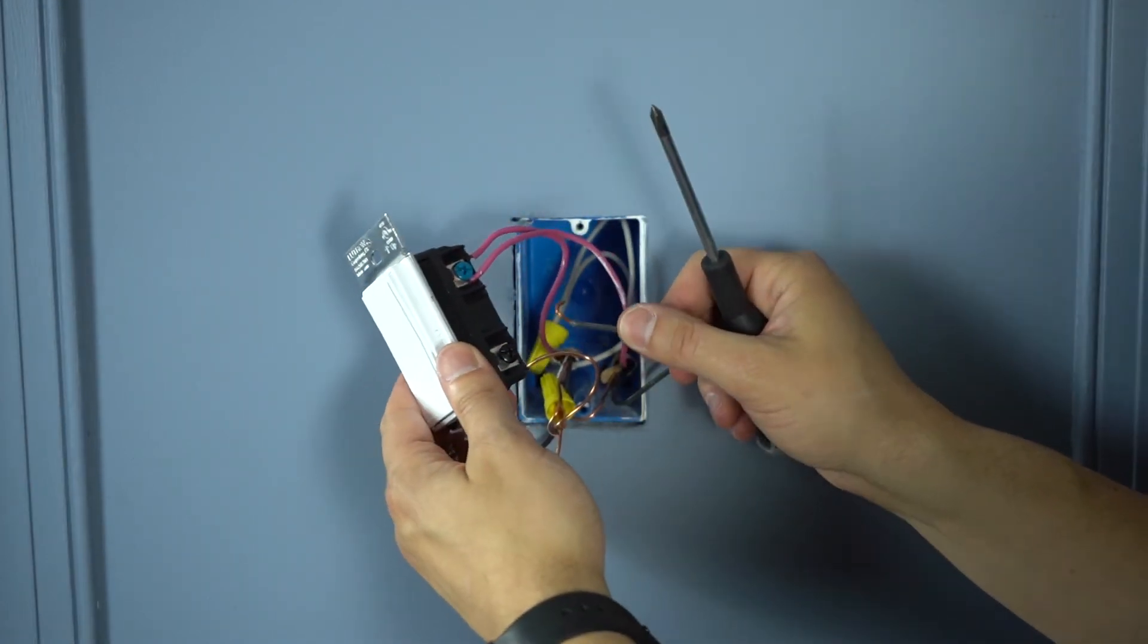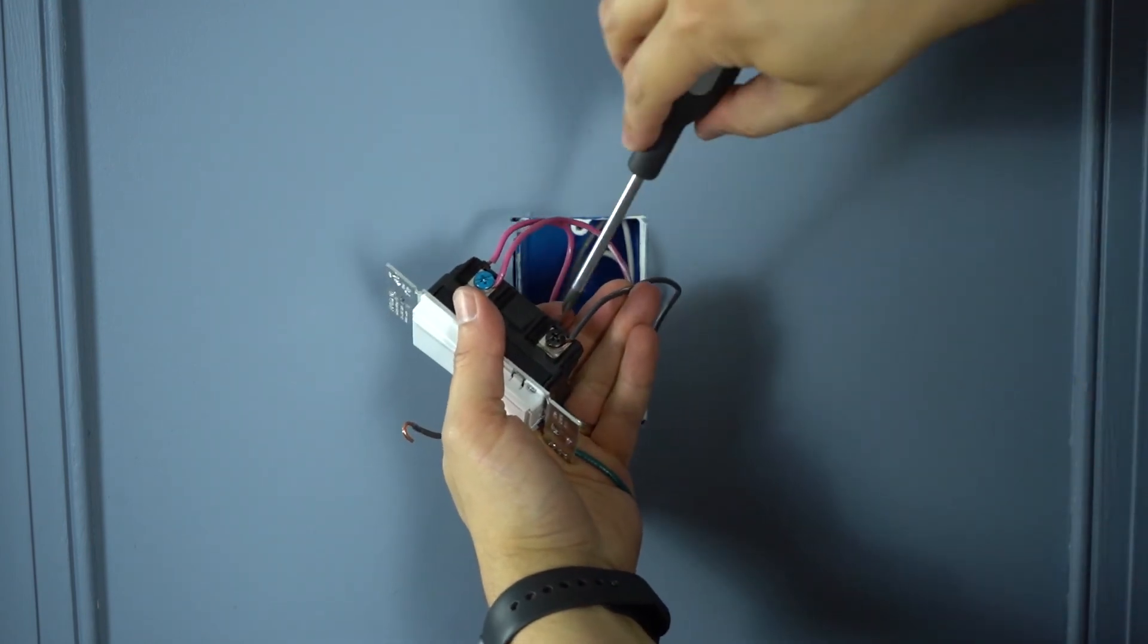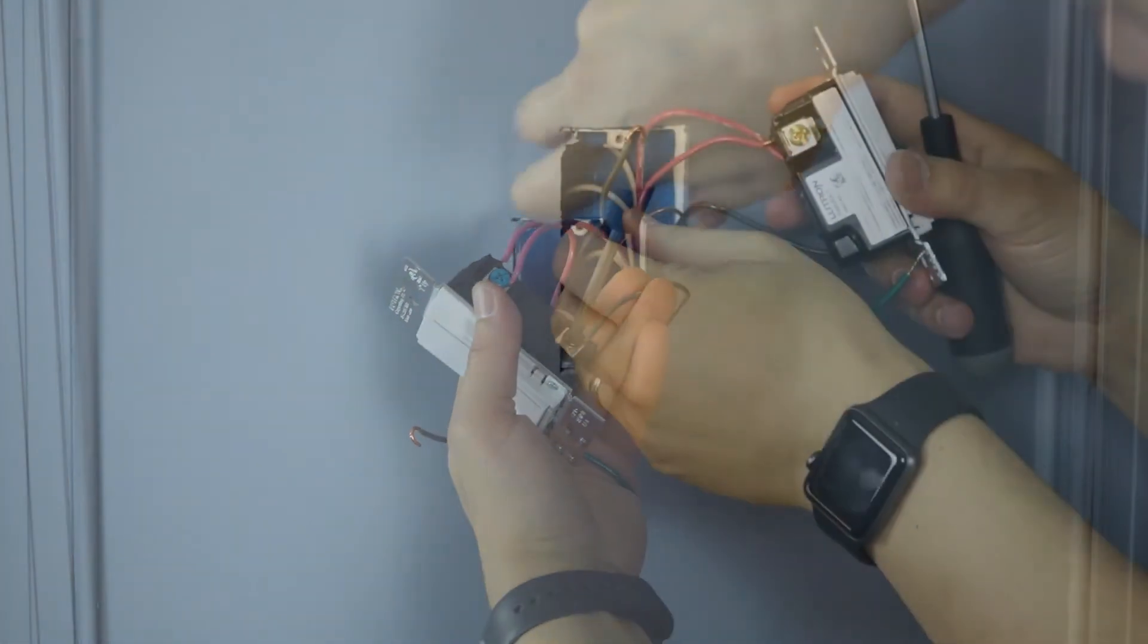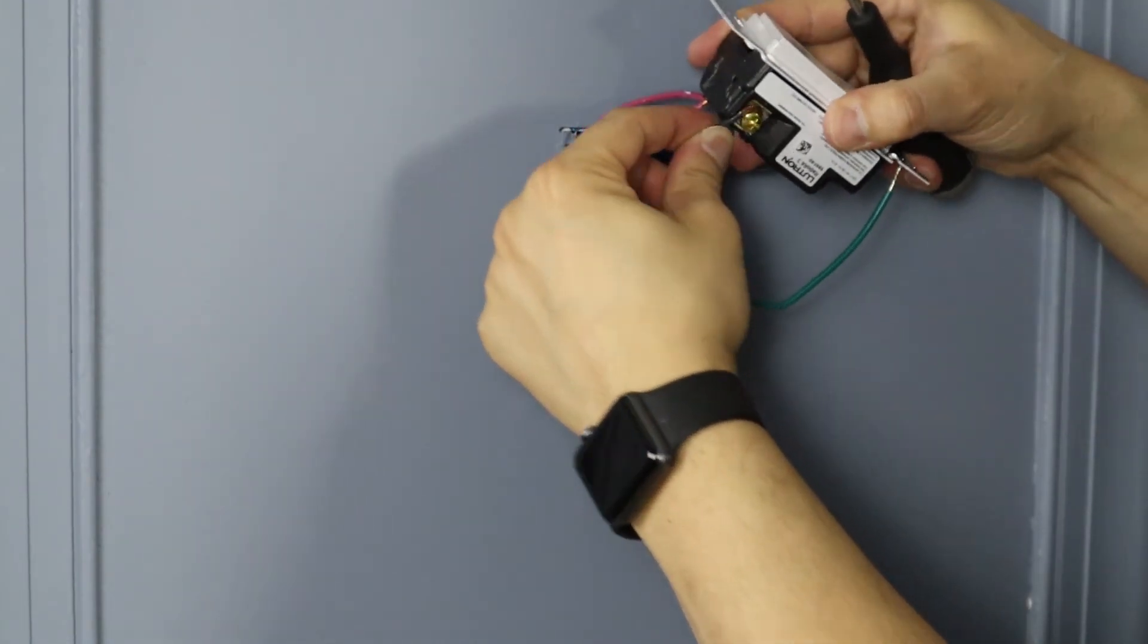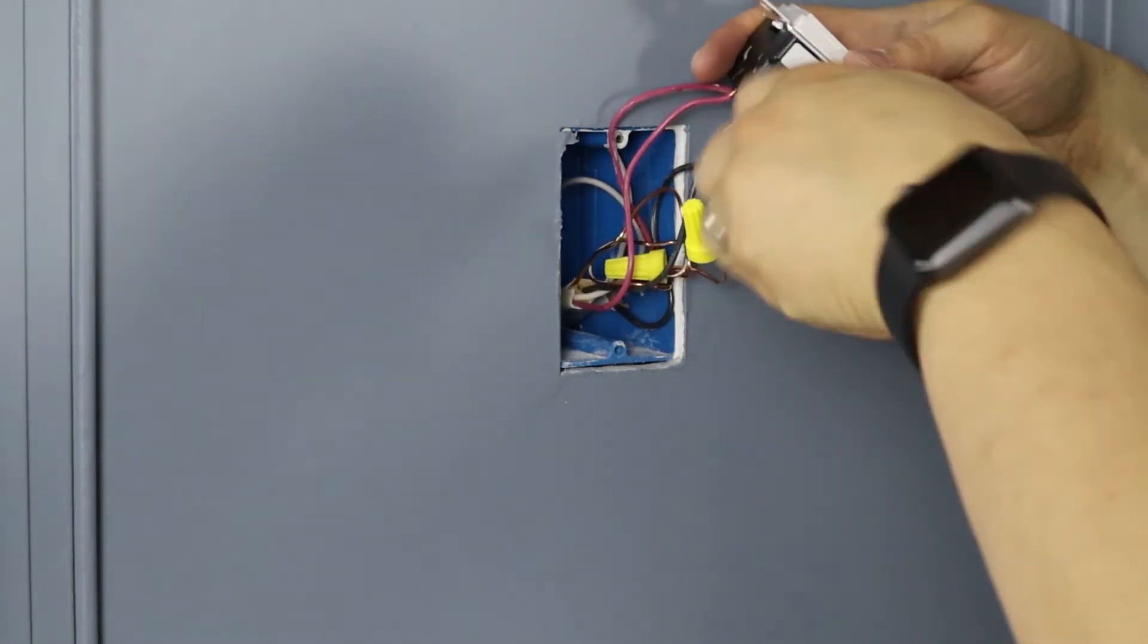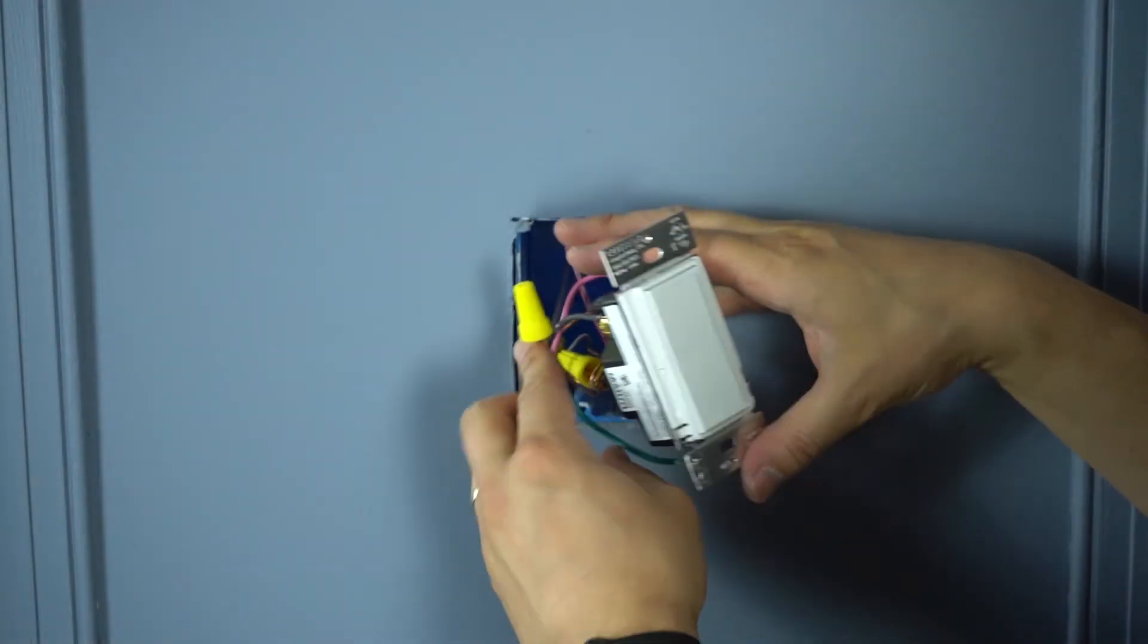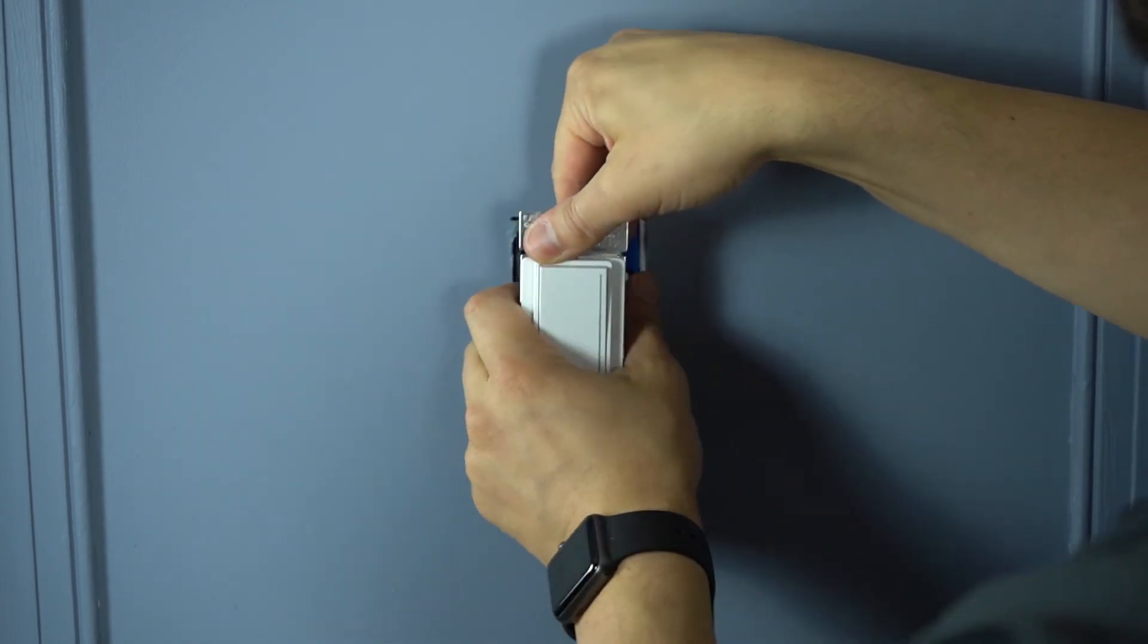Next, we're going to take one of the remaining travelers and tie it around the black screw. And the last remaining traveler will tie around the brass screw. Once the dimmer is wired, you can push the wires back into the wall and mount your companion dimmer to the wall box.